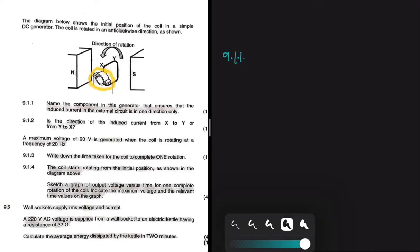That is the split ring that we have here. So 9.1.1 we have split ring. Now let's do 9.1.2, which is saying, is the direction of the induced current from x to y or from y to x? With that one, let me know in the comments and then I will pin that comment. Please leave a comment there and let me know whether the induced current is flowing from x to y or from y to x and why you are saying so.